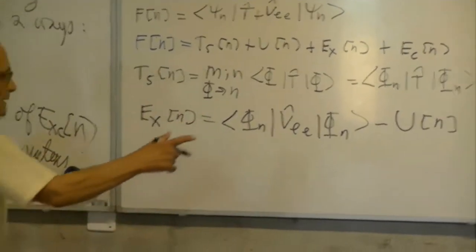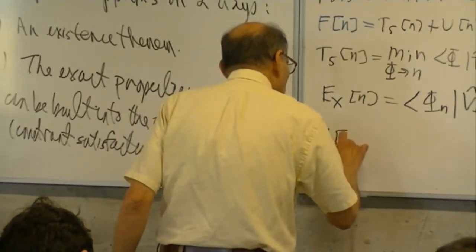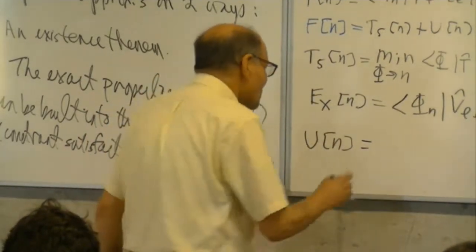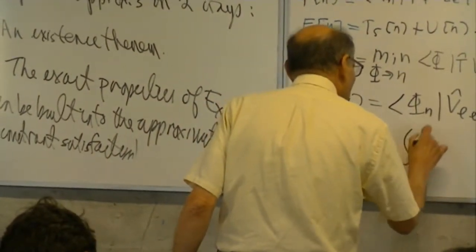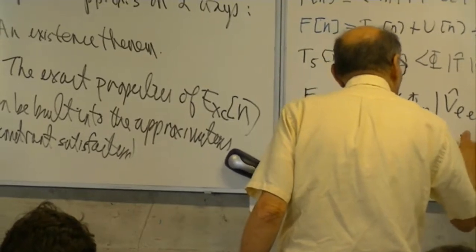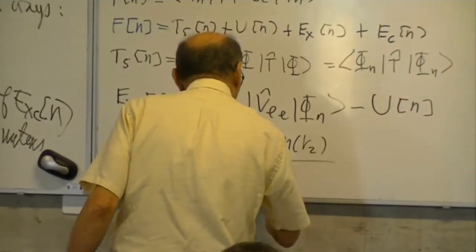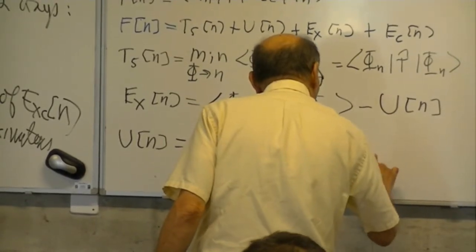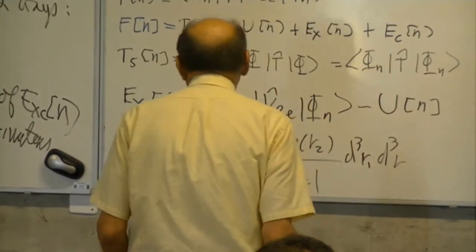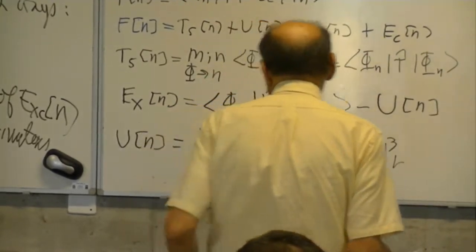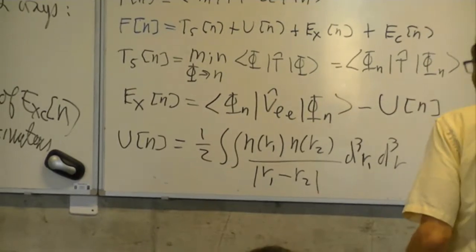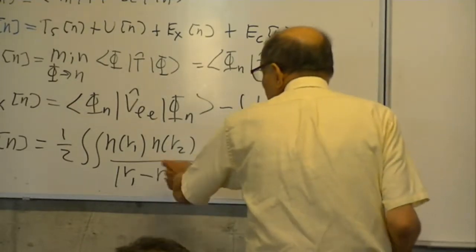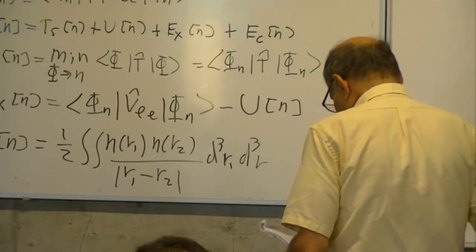U[n] is the classical repulsion energy. It's one half times the integral of n(r1) n(r2) divided by |r1 - r2| d³r1 d³r2. So exchange is Vee minus U—this is the U here. And correlation Ec[n] is the full expectation value of T plus Vee with the interacting minimizing psi_n, minus the same with phi_n.